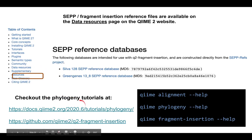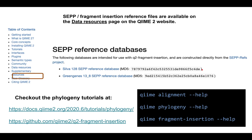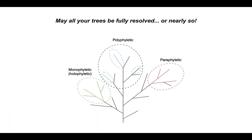The current version we're on now is 2020.6, but if you're using a later version, just change that to the current version. And the Q2 fragment insertion tutorial is linked there as well. If you want to know more information about these tools, just type in the plugin and dash dash help. Hopefully you've learned a little bit in the general sense of how to do and how to build trees and construct phylogenies, and all of the caveats you should think about when doing so. That's it — it was my pleasure to discuss this with you. I hope all your trees are fully resolved, or nearly so. Take care.